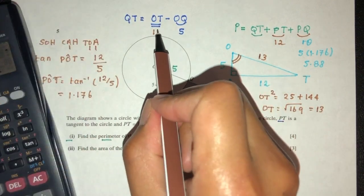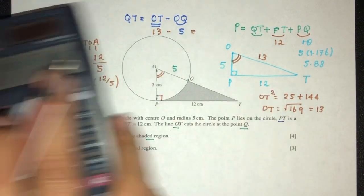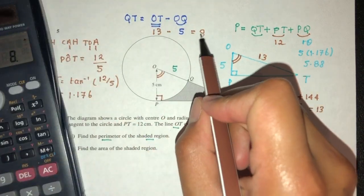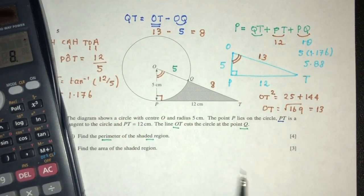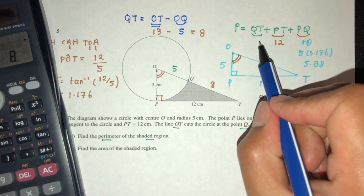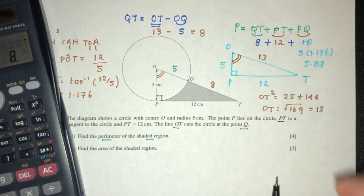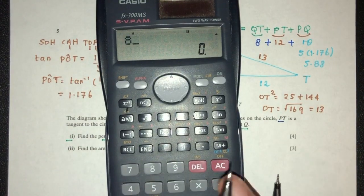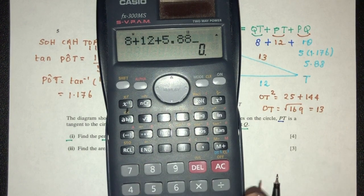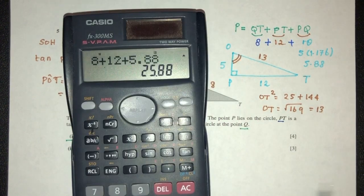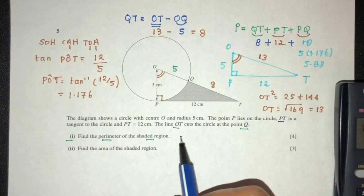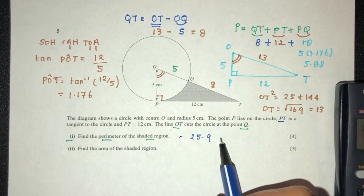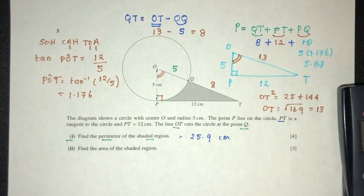So replace, you will have 13 minus 5 will be what? 8. So the value of QT will be 8. So here we have 8. So add, add, let's see what do we have. 8 plus 12 plus 5.88, that should be 25.9, correct to 3 significant figures. That is part 1 of the question.